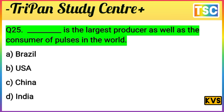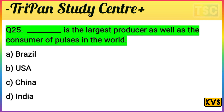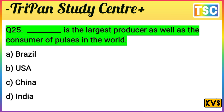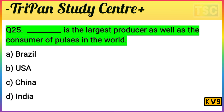Next question: Dash is the largest producer as well as the consumer of pulses in the world. Option A: Brazil. Option B: USA. Option C: China. Option D: India. India is the correct answer — India is the largest producer and consumer of pulses in the world. So D, India, is correct.